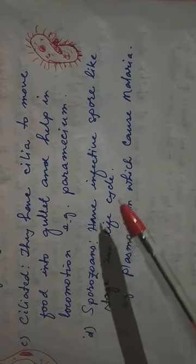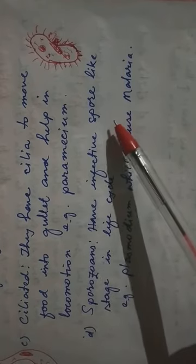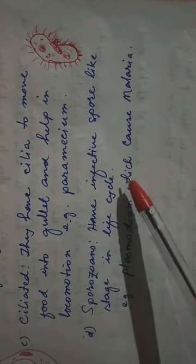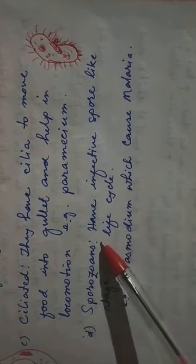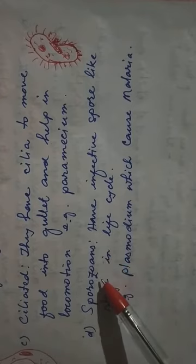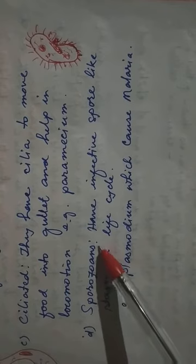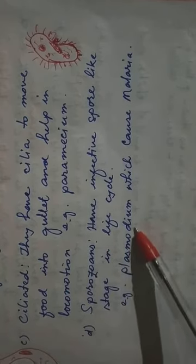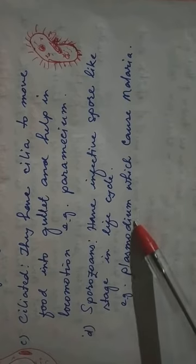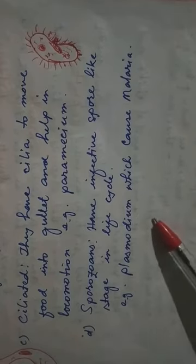During their life cycle, they produce this spore — spore-like stages. This type of organism which produces spore-like structures in their life cycle comes under sporozoans. The example is Plasmodium — species like Plasmodium vivax, Plasmodium falciparum, and Plasmodium malariae.